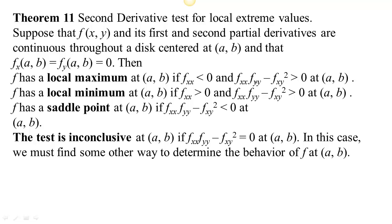If f sub xx is positive, you know it has the same concavity in all directions. Looking at f sub xx tells you that it's concave down along the x-axis and therefore it's concave down everywhere, and you have a local maximum. On the other hand, if the determinant of the Hessian matrix is positive and f sub xx is greater than zero, it's concave up along the x-axis and therefore concave up in all directions, so you have a local minimum. But if the Hessian determinant is negative, you know that it's concave up in some directions and concave down in others, so you have a saddle point.